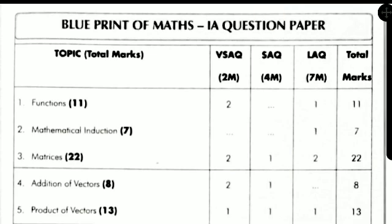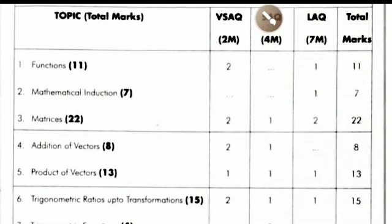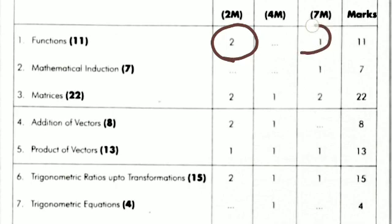Let us see the weightages. This is the blueprint of the Maths 1A question paper. So I'll post the weightages for Maths 1A paper. See here, the first topic is Functions. Functions has 2 very short answer questions and 1 long answer, one 7-marks question. So 2 plus 4 equals 11 marks.